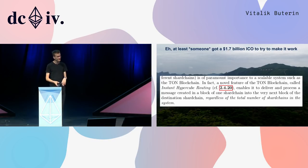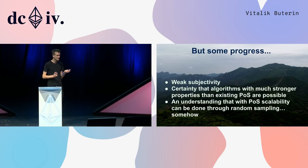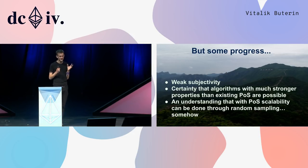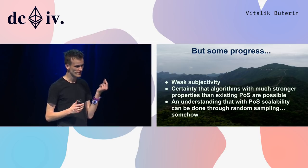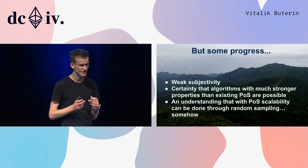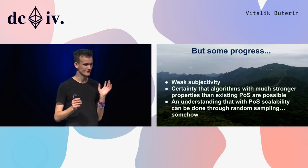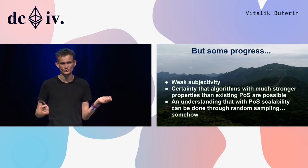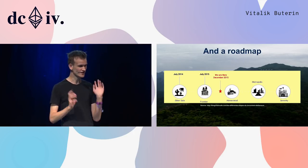In 2014 there was still some progress. There was this concept of weak subjectivity — a semi-formal security model that tries to capture the idea of under what conditions proof of stake deposits, slashing, and all these concepts are actually secure. We also got more and more certain that algorithms with much stronger properties than the proof of stake algorithms that existed at the time — things like pure coin and all its derivatives — were actually possible, along with a growing understanding that there was some kind of proof of stake scalability strategy achievable through random sampling.